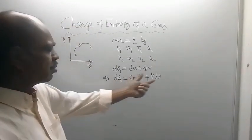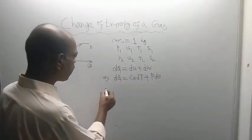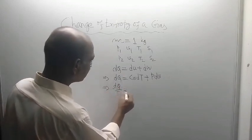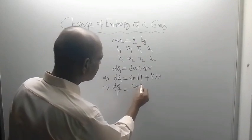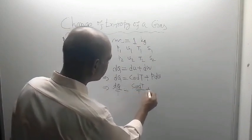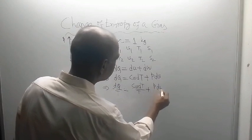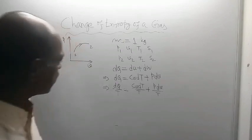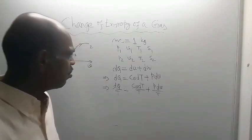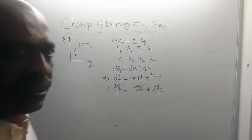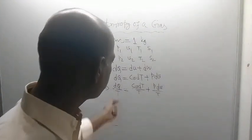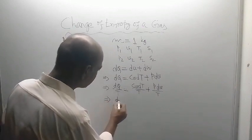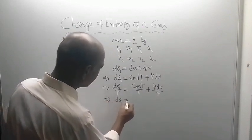Now divide both sides of this equation by absolute temperature T. So DQ/T = CvDT/T + PDV/T. This DQ/T — according to the definition of entropy, you know that DQ/T is nothing but the change in entropy, that is DS.